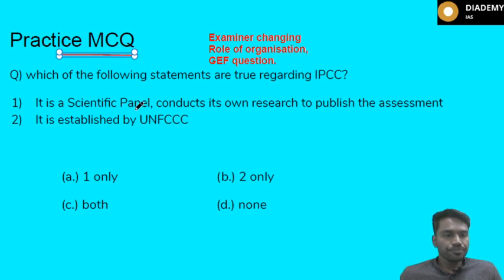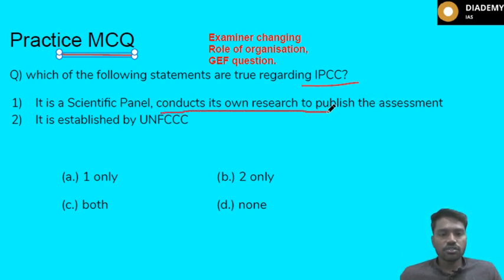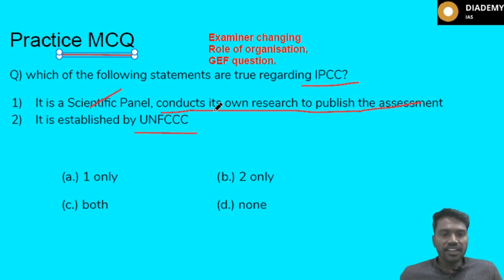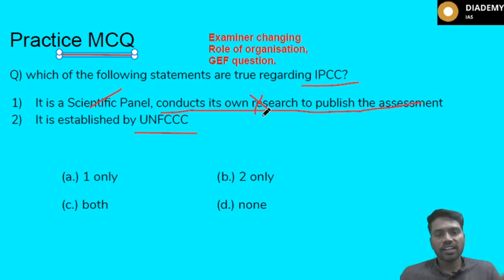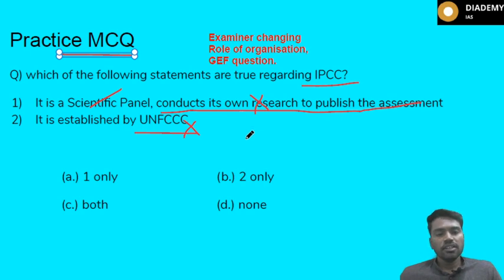Practice MCQ on IPCC: Statement 1 says IPCC is a scientific panel that conducts its own research to publish assessments - this is false. IPCC does NOT conduct its own research; it takes published reports and makes assessment reports from them. Statement 2 says it was established by UNFCCC - this is also false; it was established by UNEP and the World Meteorological Organization. Therefore the answer is 'none' - neither statement is correct.